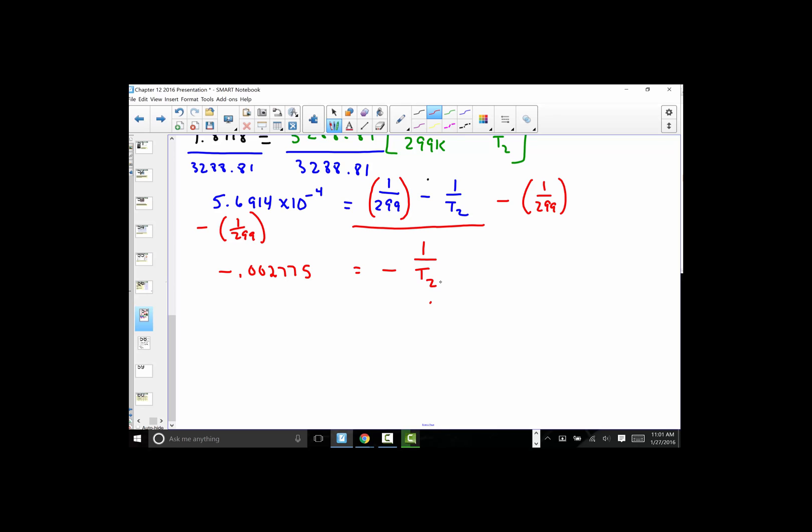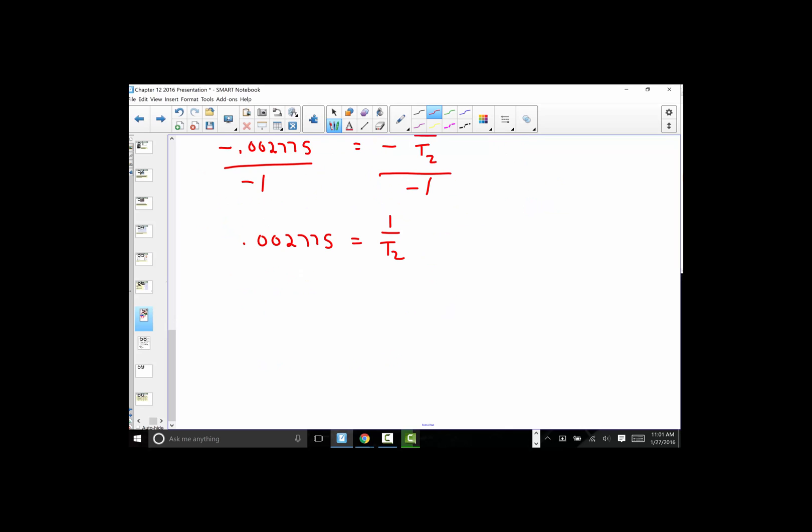That's equal to the reciprocal of T2. So how do we pull out T2? Well, really the T2 and that value just switch sides. So I'm going to divide both sides by negative 1, and now I just simply have positive values. The negatives just simply cancelled one another out.